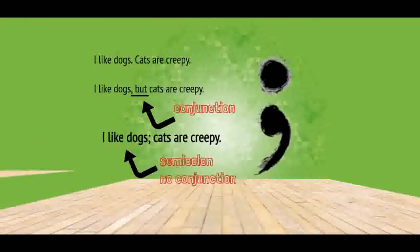Here's an example of how we combine sentences using semicolons. We have two sentences: 'I like dogs' and 'cats are creepy.' We can combine those with a conjunction — 'I like dogs, but cats are creepy' — where 'but' is the coordinating conjunction. Or we could use a semicolon: 'I like dogs; cats are creepy.' When we use a semicolon, we do not use a conjunction at all. Semicolons and conjunctions don't play nice with each other.